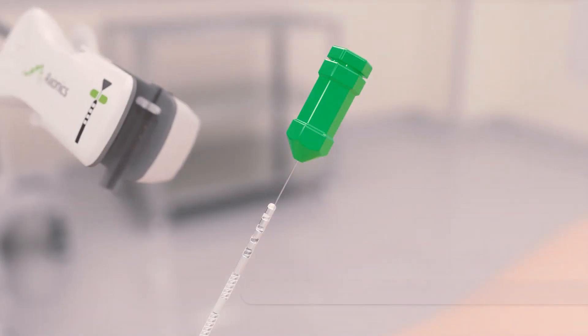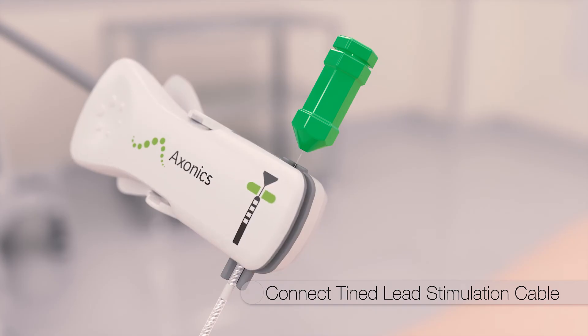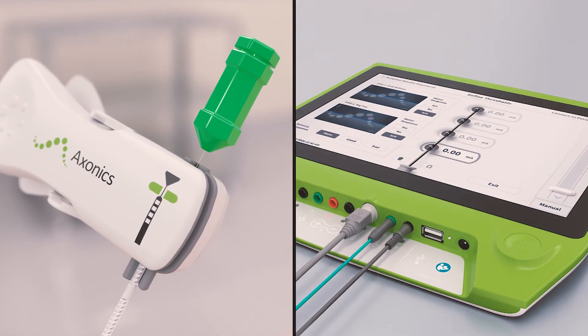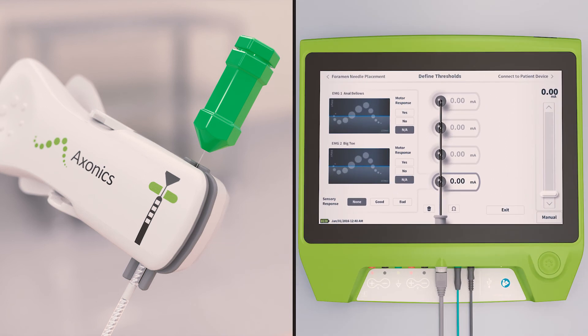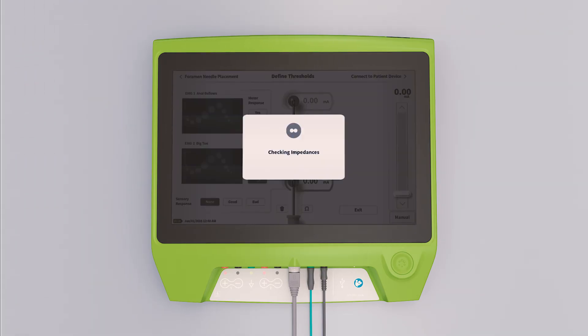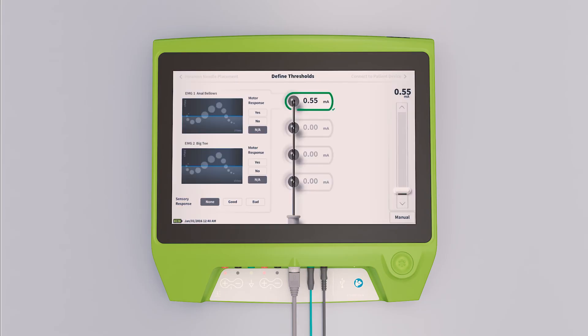The tined lead stimulation cable is clipped to the proximal end of the lead and connected to the clinician programmer. This feature of the axonic system eliminates the need for the physician to adjust the location of the test stimulation cable. The clinician programmer is used to check lead impedances before stimulation delivery. Each electrode is individually tested.